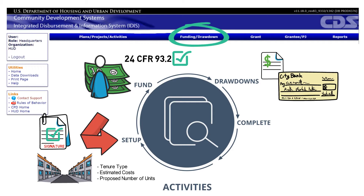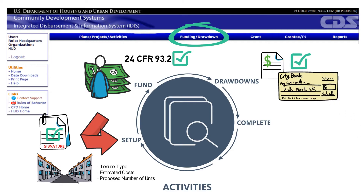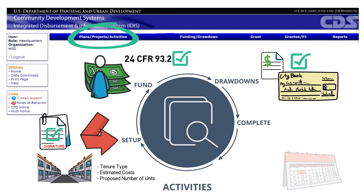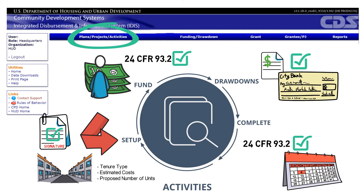Drawdowns can be made while in the Funding Drawdown tab. As eligible costs are incurred and pay requests or invoices are received by the grantee, drawdown vouchers can be created and approved. The last step is Project Completion. Projects can be completed while in the Plans, Projects, Activities tab. You should make sure that your HTF project meets the definition of project completion outlined in 24 CFR 93.2 before completing the activity in IDIS. Remember to enter all beneficiary data and complete the activity in IDIS within 120 days of the final drawdown.